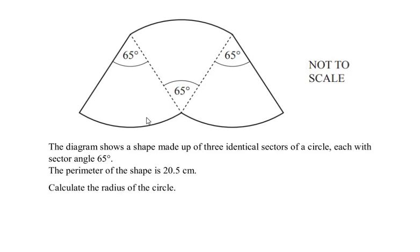Hello and welcome to my channel. In this video we are going to solve an example on mensuration. The diagram shows a shape made up of three identical sectors of a circle, each with sector angle 65 degrees.